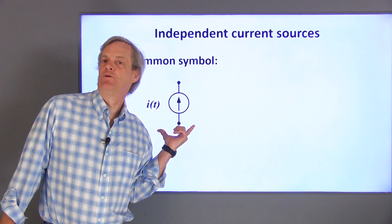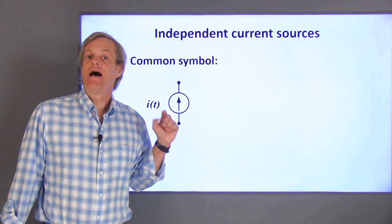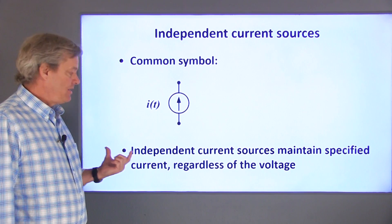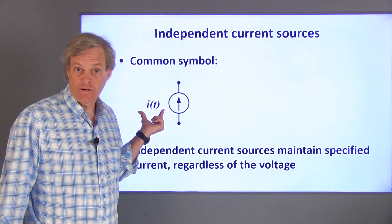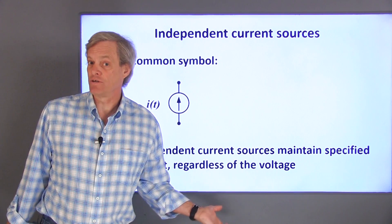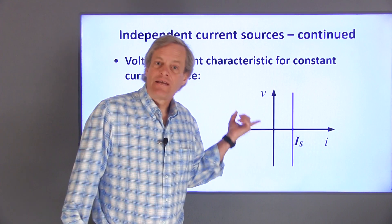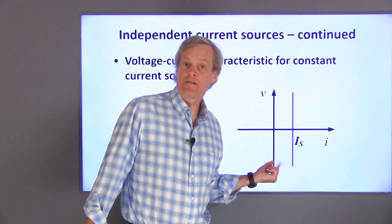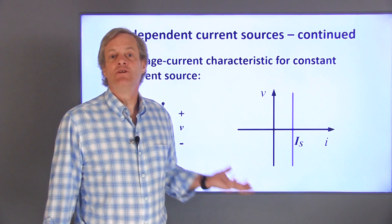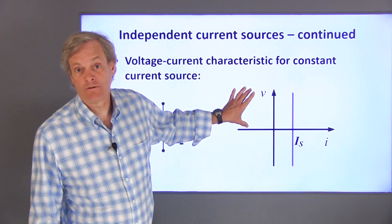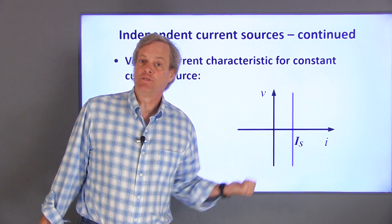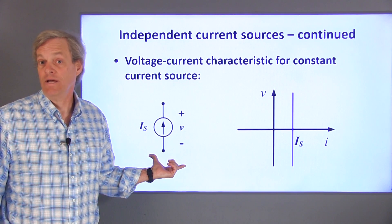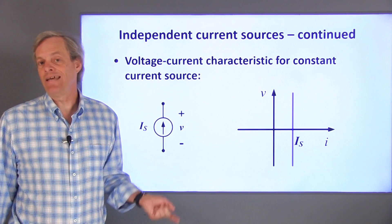This is the symbol for an ideal independent current source. I'll use it to represent both time-varying and constant current sources. An ideal independent current source provides the displayed amount of current regardless of the voltage difference across the current source. The voltage-current characteristic for an ideal independent current source looks like this. The voltage is independent of the current and can take on any value. We don't even know anything about the sign of the voltage — it can be either positive or negative. As with the voltage source, we don't need to obey the passive sign convention if we define the voltage across the current source, since there isn't a functional relationship that relates the voltage and the current.